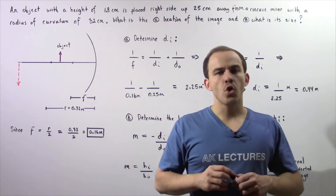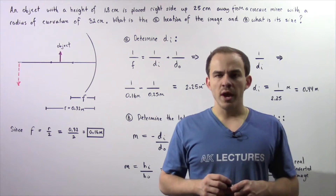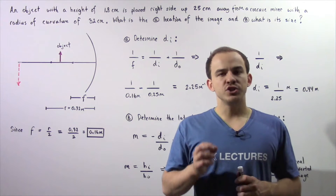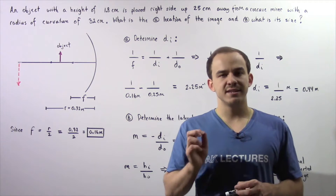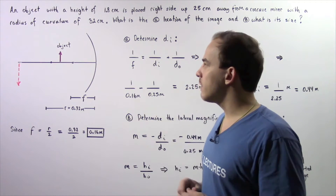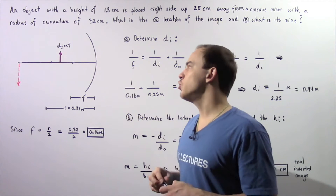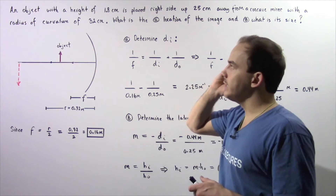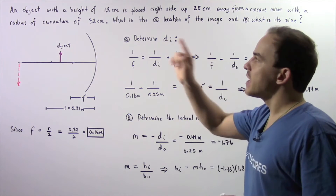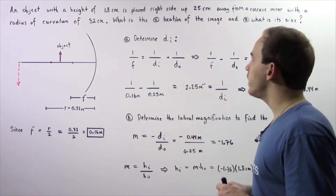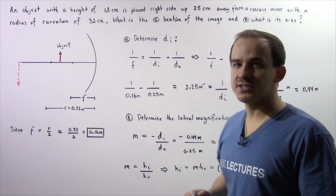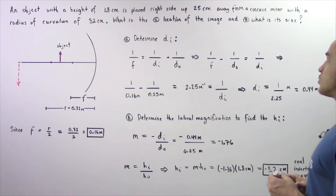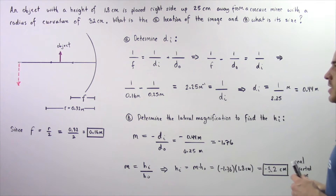In this example, we're going to apply the mirror equation that we derived in the previous lecture to determine the height of the image as well as the distance from the center of the concave mirror to where our image is located. An object with a height of 1.8 centimeters is placed right side up 25 centimeters to the left of a concave mirror.